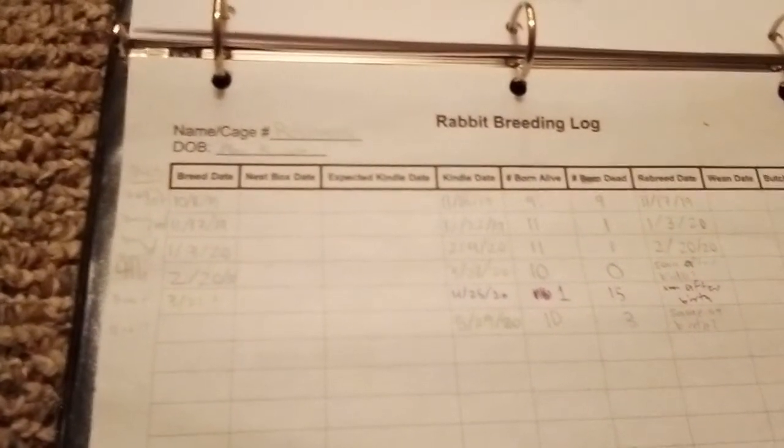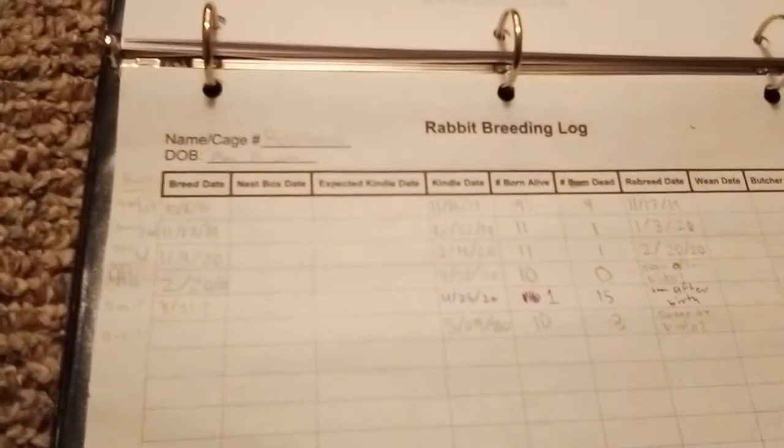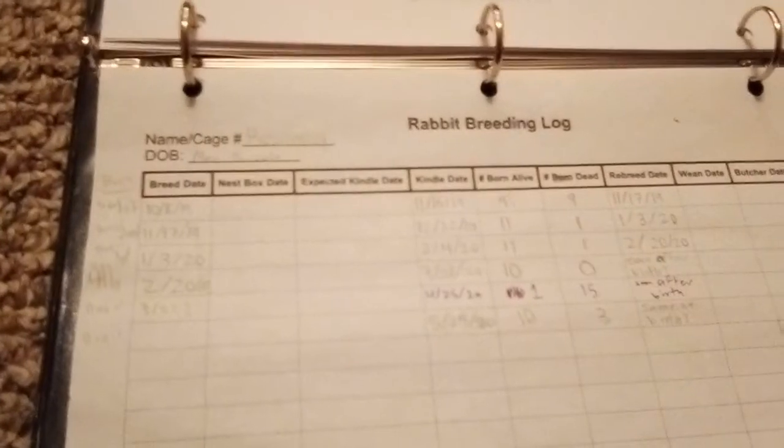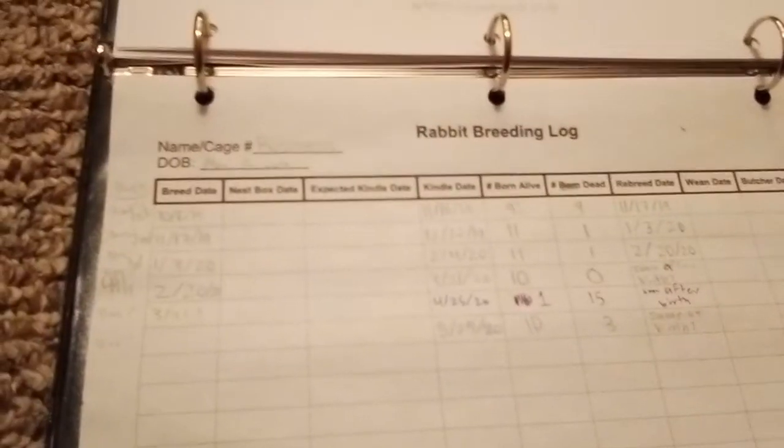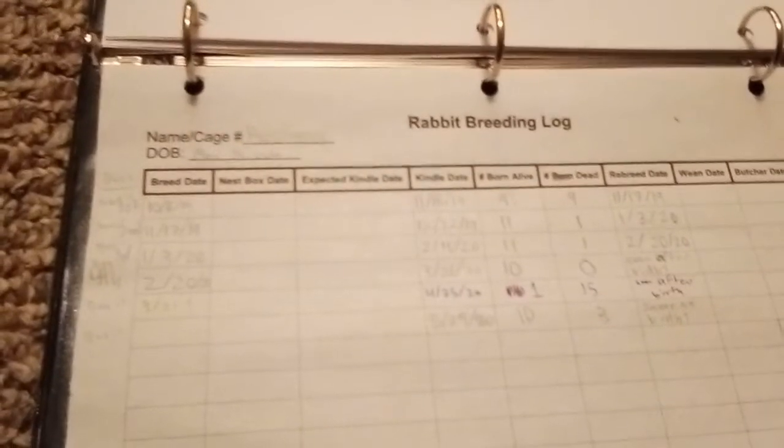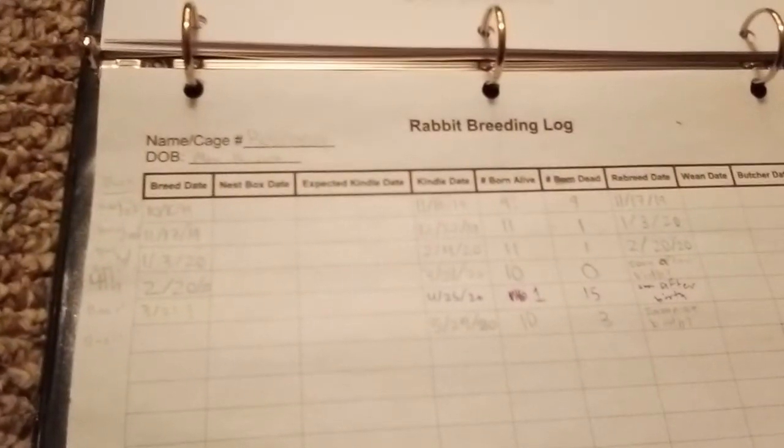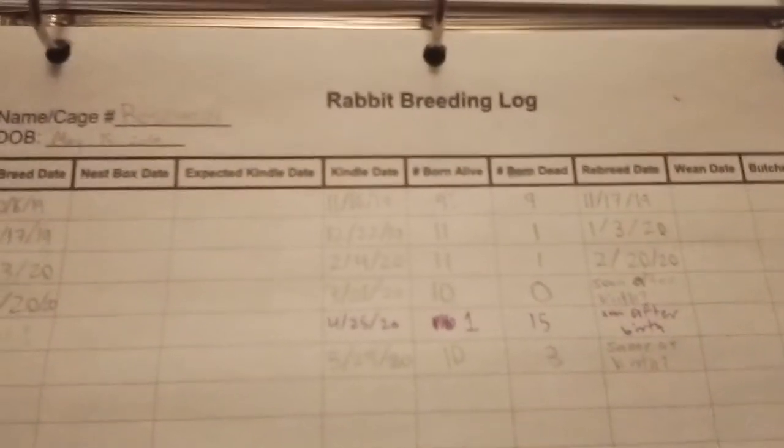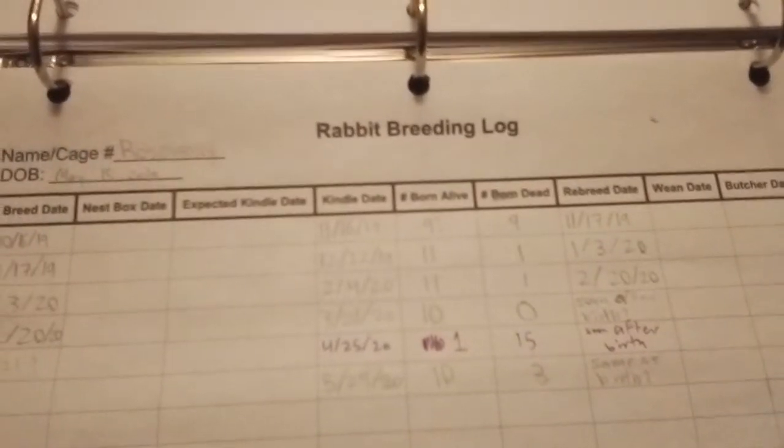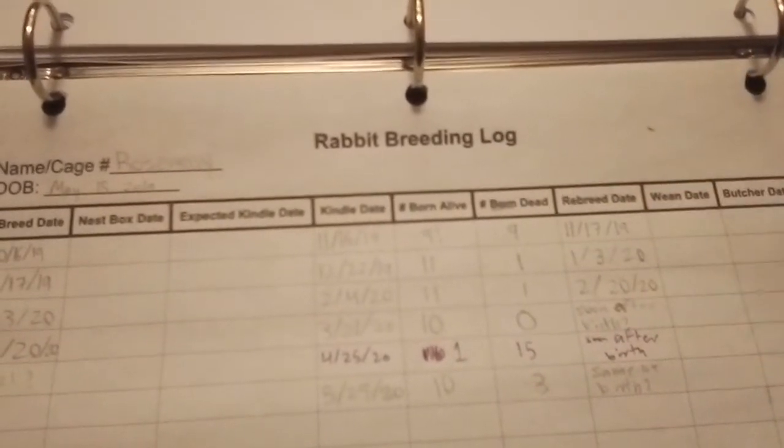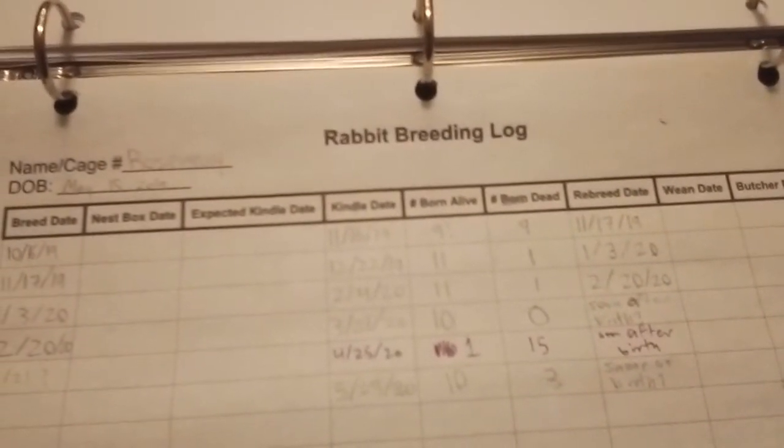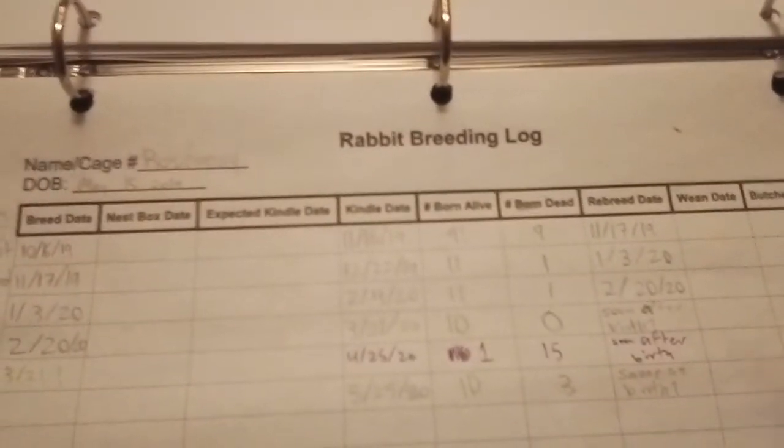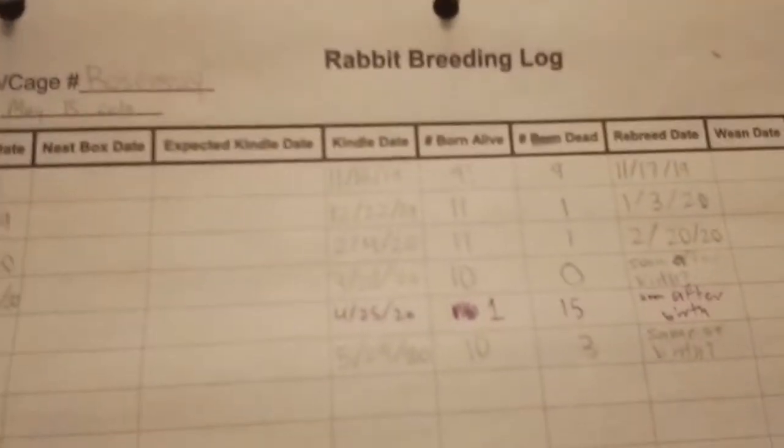Same thing with expected kindle date - if we don't know when they were bred, we don't know exactly when they're gonna have babies. If I do happen to note that, I'm gonna write that in my actual calendar because I look at that and don't really look at this unless I'm filling in babies who are born or looking up something special. The kindle date, which means give birth, is very important because then you know how old your babies are.